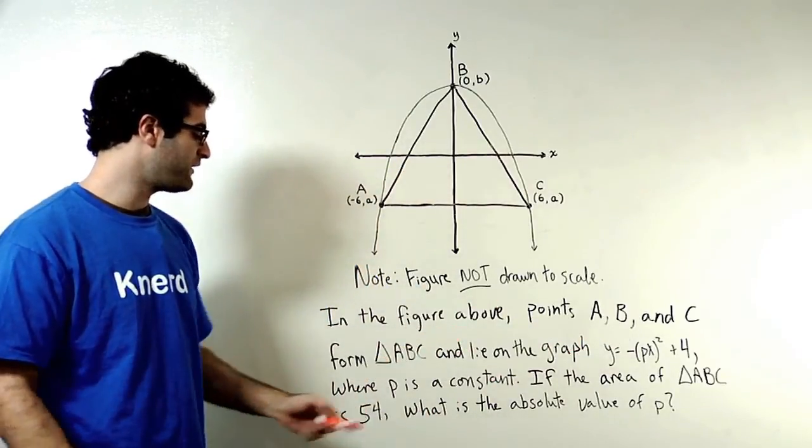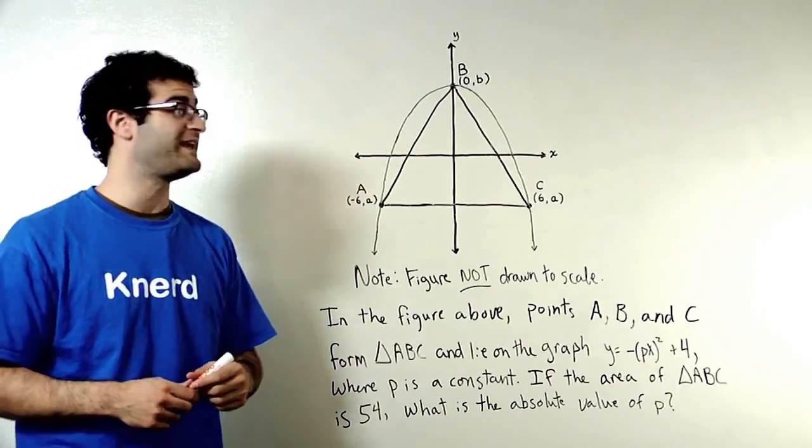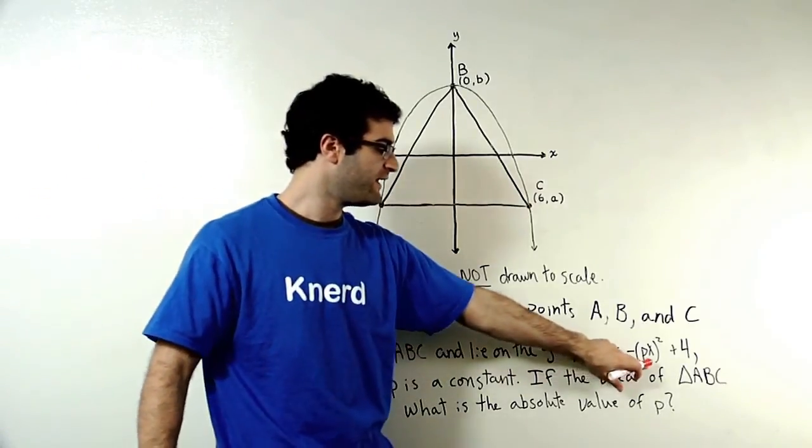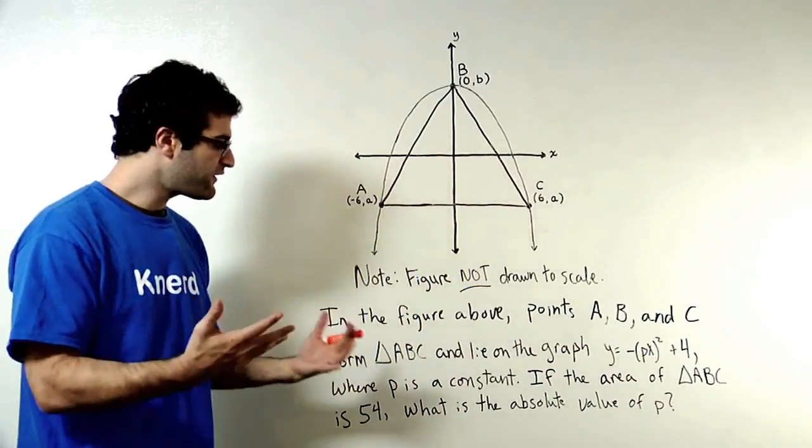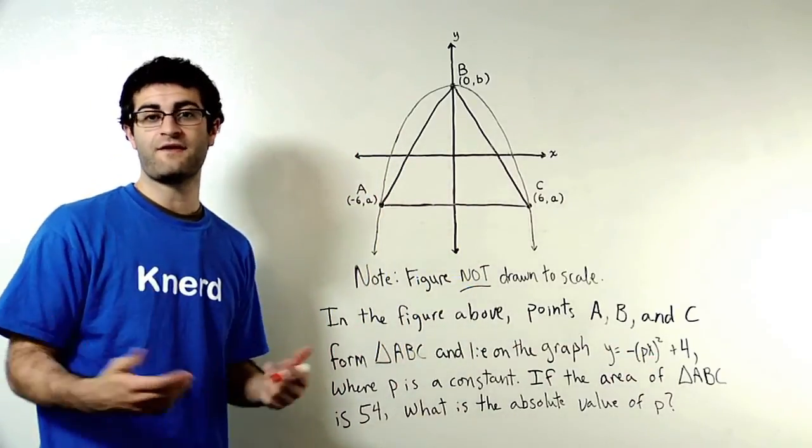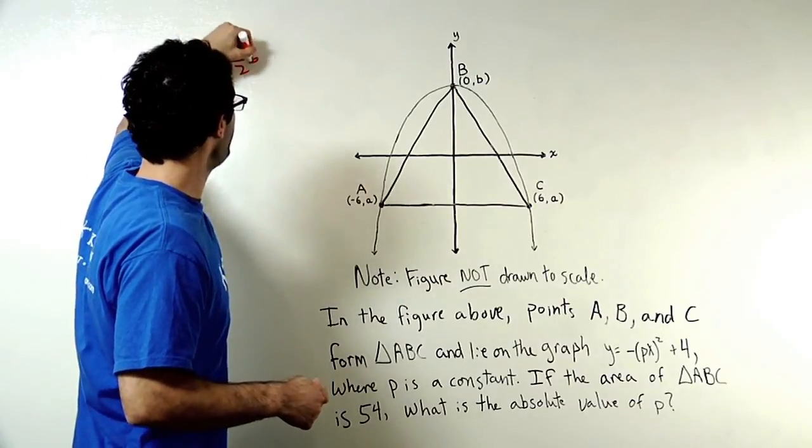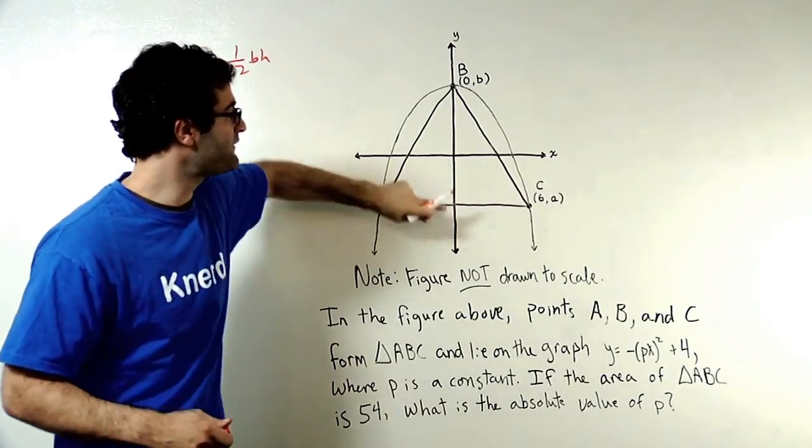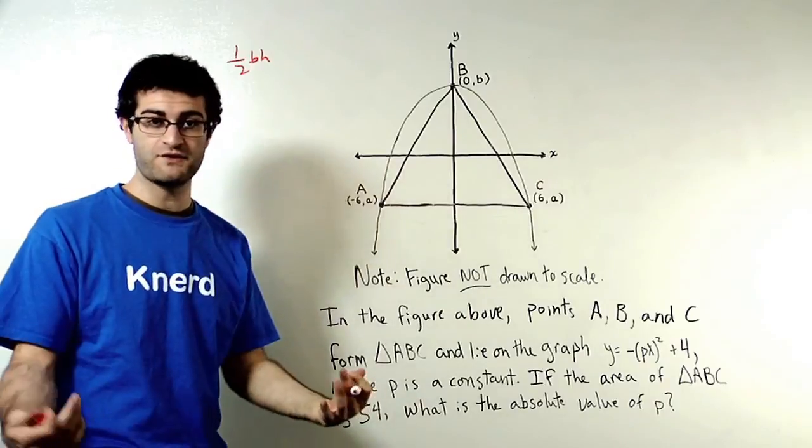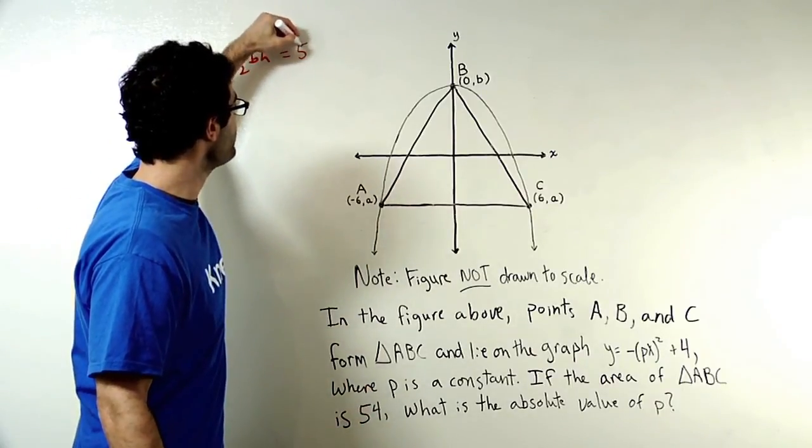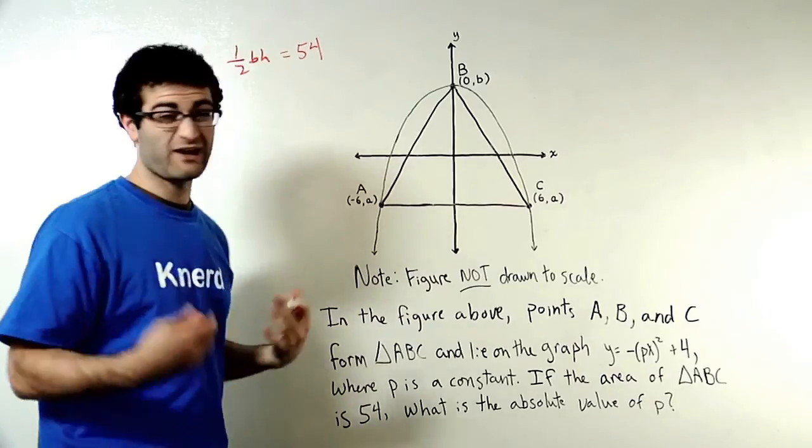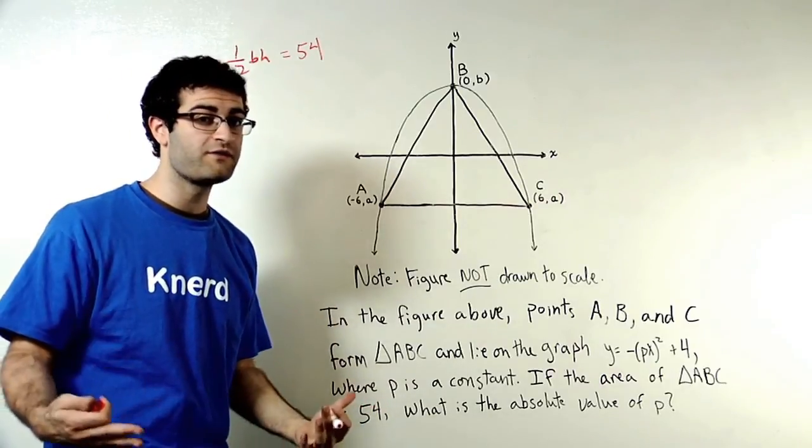If the area of triangle ABC is 54, what is the absolute value of P? Ultimately, what we're trying to find is this constant P. Let's start with something that we're comfortable with, the fact that the area of the triangle, which is one-half times base times height. In this case, one-half times base times height is 54. Can we do any better than that? Can we solve for one of these variables?